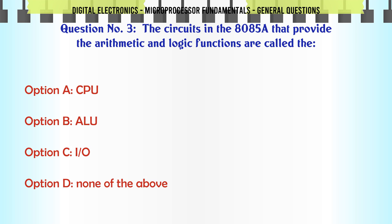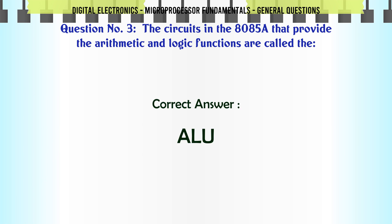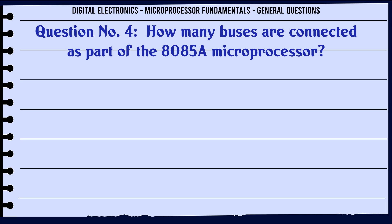The circuits in the 8085A that provide the arithmetic and logic functions are called the: A. CPU, B. ALU, C. I/O, D. None of the above. The correct answer is ALU.